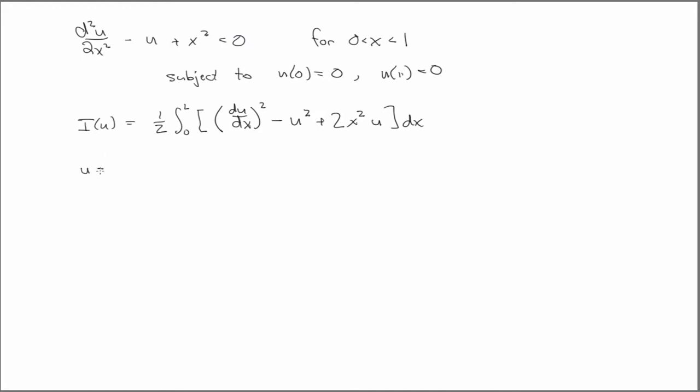So we're going to assume an algebraic polynomial that interpolates the displacement field. U of H is equal to the sum from J equals 1 to N, C_J phi_J. And for this one, we'll just take C1 plus C2X plus C3X squared.